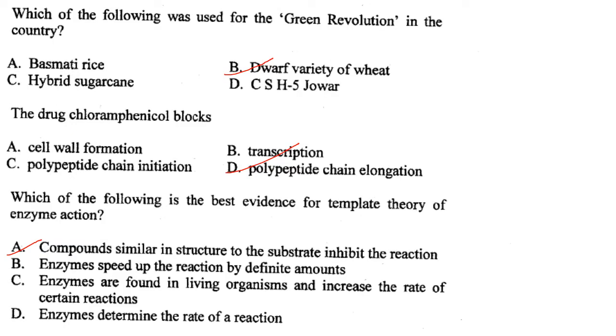Which of the following was used for the green revolution in our country? It was the dwarf variety of wheat.